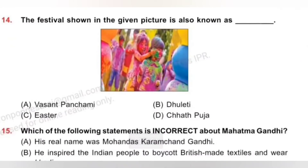Question 14: The festival shown in the given picture is also known as — A. Vasant Panchami, B. Duleti, C. Easter, D. Chhath Puja. Holi, the festival of colour, is also known as Duleti. On this day, people apply colours on each other and play Holi. Option B is the correct answer.